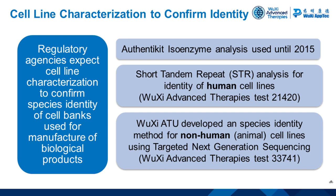Why do we offer cell line identity testing? Because regulatory agencies expect characterization of cell banks used for the manufacture of biologics to confirm species identity. Like other companies in the biopharma industry, WUSHI used the Authentikit isoenzyme analysis up until 2015, when it was no longer available. At this time, WUSHI implemented short-tandem repeat (STR) analysis, a technology used in forensics to establish human identity. The STR analysis method was applicable only for identification of human cell lines, so to cover the gap, we developed a targeted next-generation sequencing method for animal cell lines.